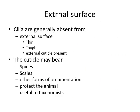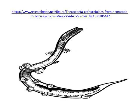External surface: cilia are generally absent from the external surface. The cuticle is thin, tough, and external. The cuticle may bear spines, scales, or other forms of ornamentation that protect the animal and are useful for taxonomists to classify the organisms. Here you can see the diagram where scales, spines, or some ornamentation are present on the Aschelminthes body.